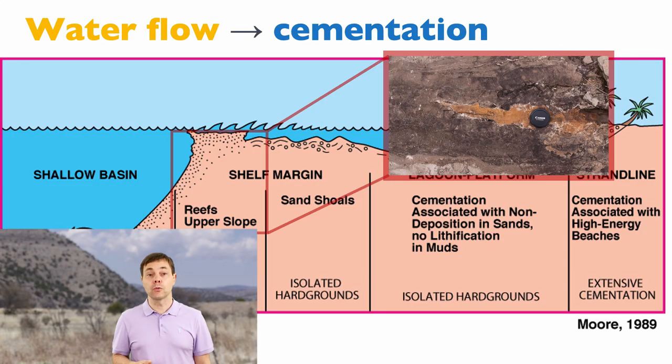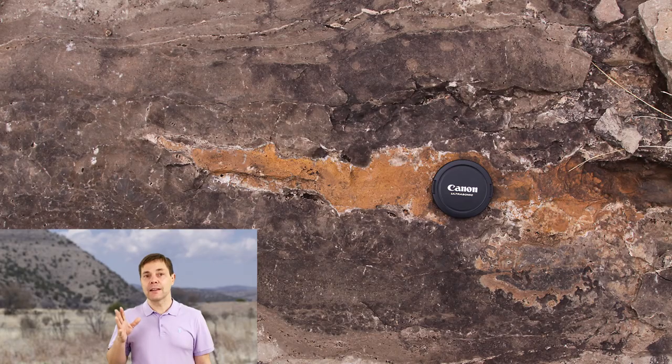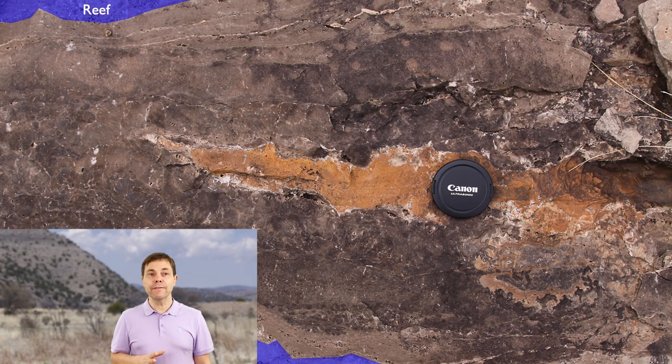Another important site of precipitation is the shelf margin or the reef itself. Looking at the Guadalupe Mountains example right behind me, I'll draw the contour of the reef association - in this case mostly algae, sponges, and some bryozoans. The reef is outlined here in blue.